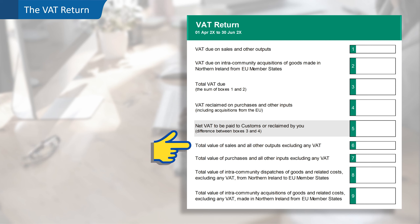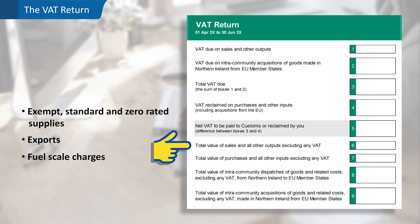Box six is the total value of sales and all other outputs excluding any VAT. This will include exempt, standard and zero rated supplies made, supplies to EU and non-EU states — that is exports — as well as any fuel scale charges. This total should also be adjusted for any credit notes issued by the business, excluding the VAT.